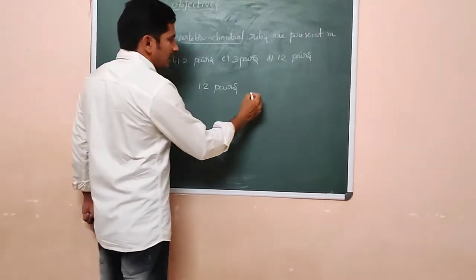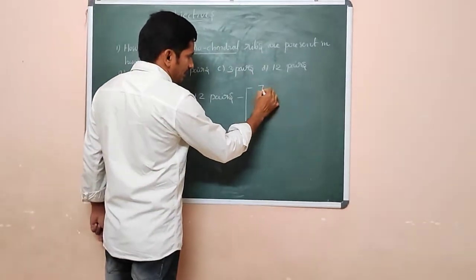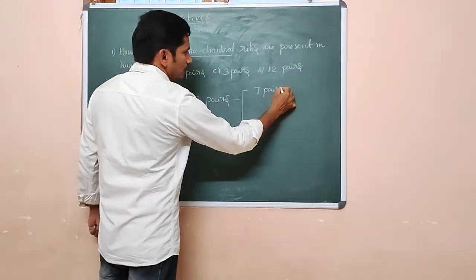We can divide into 3 categories. The first 7 pairs are called the true ribs.